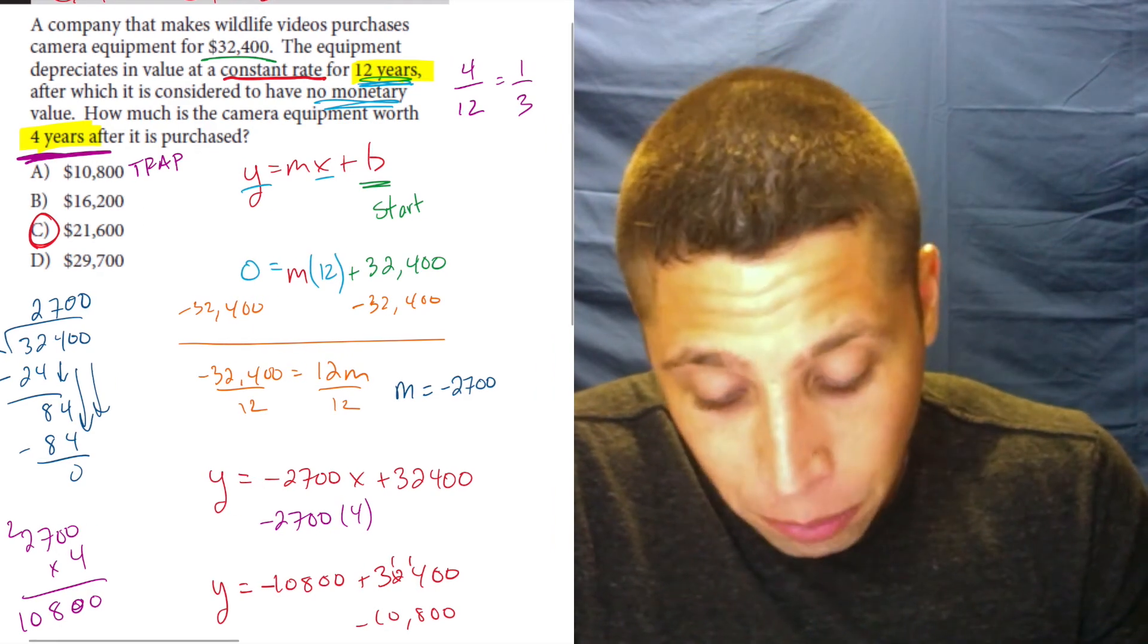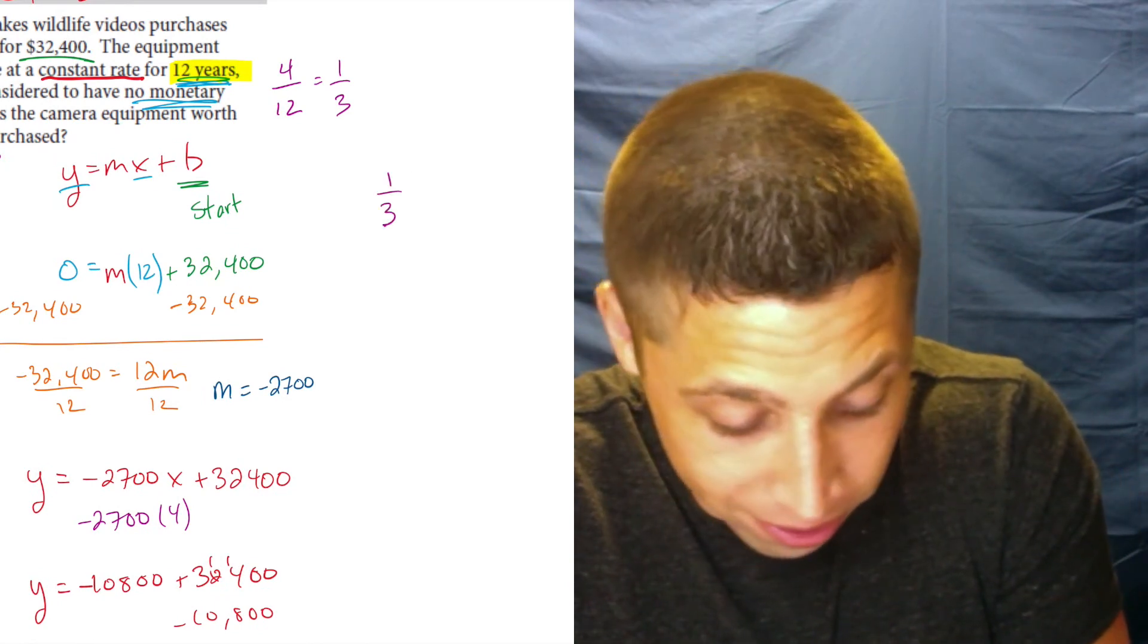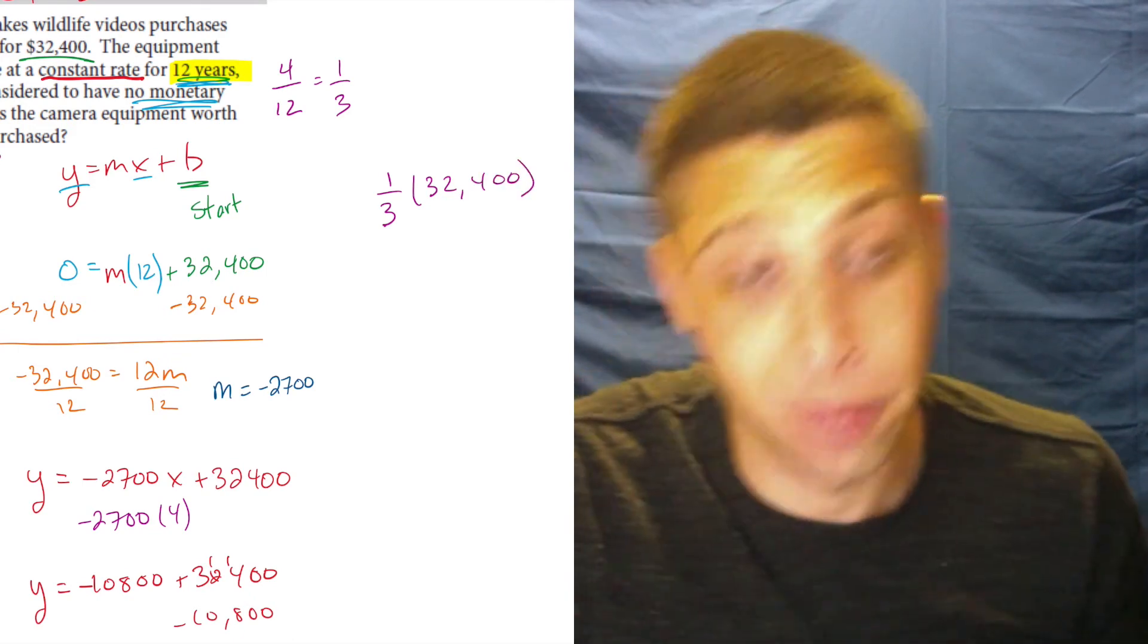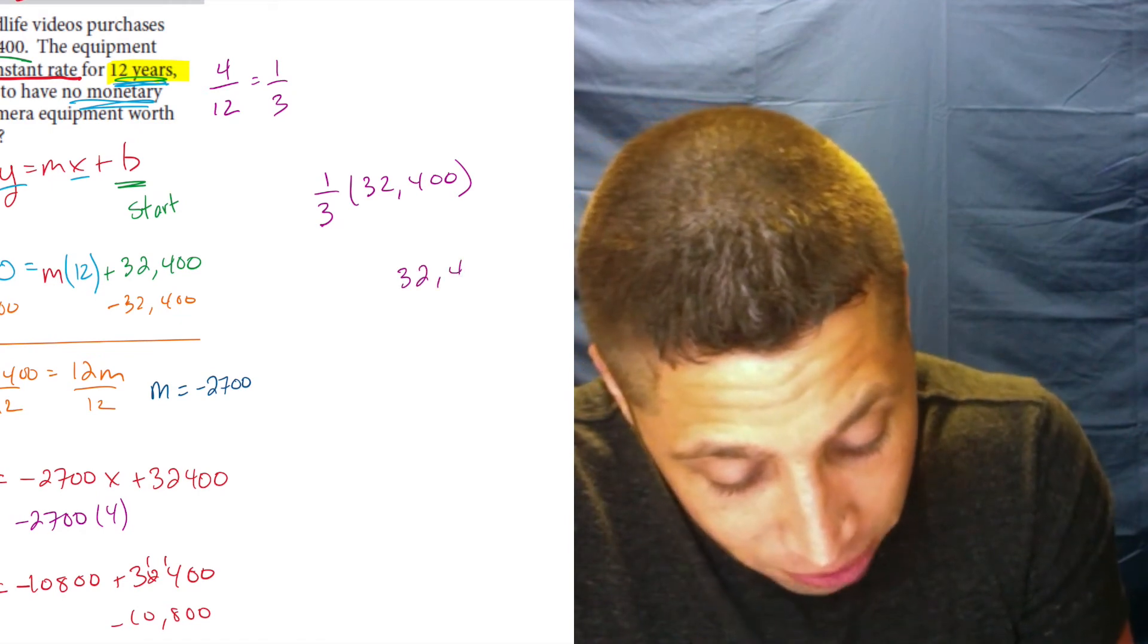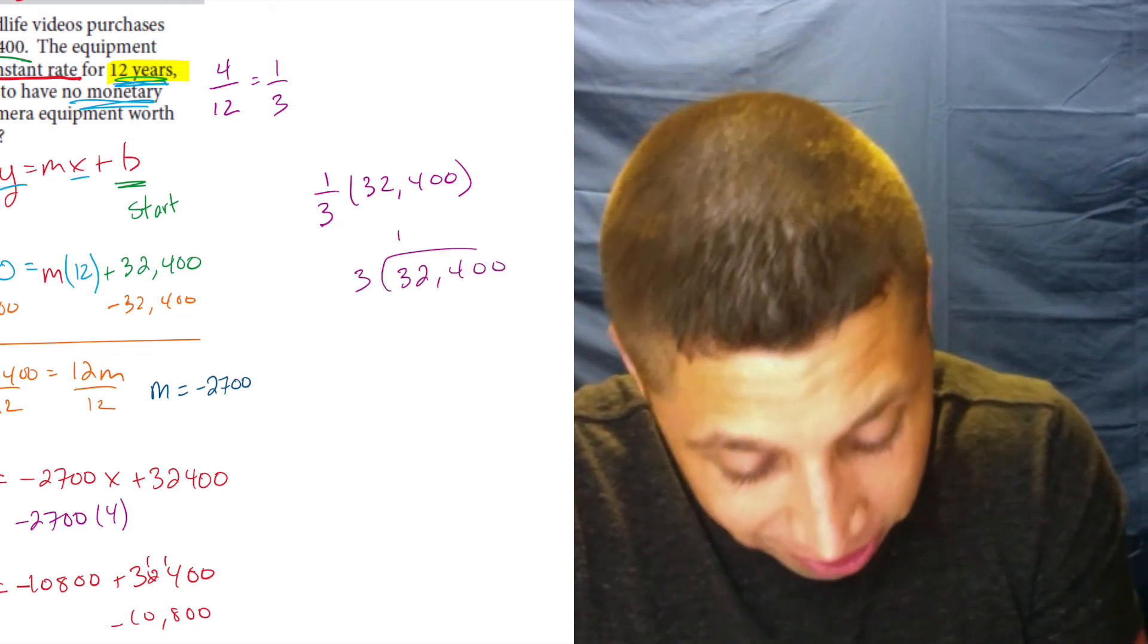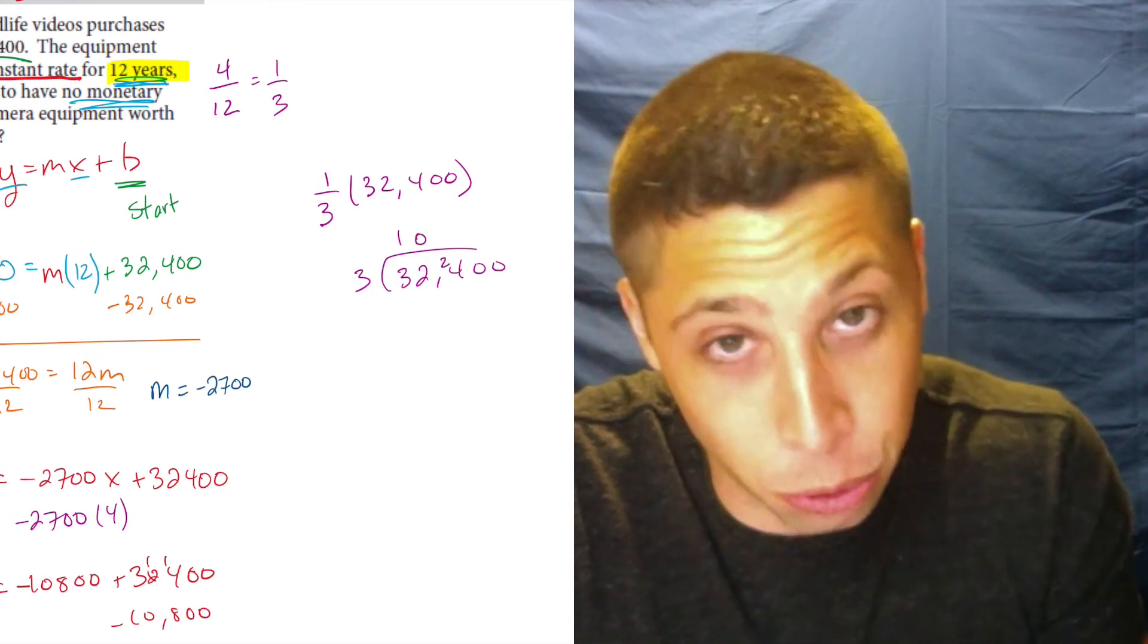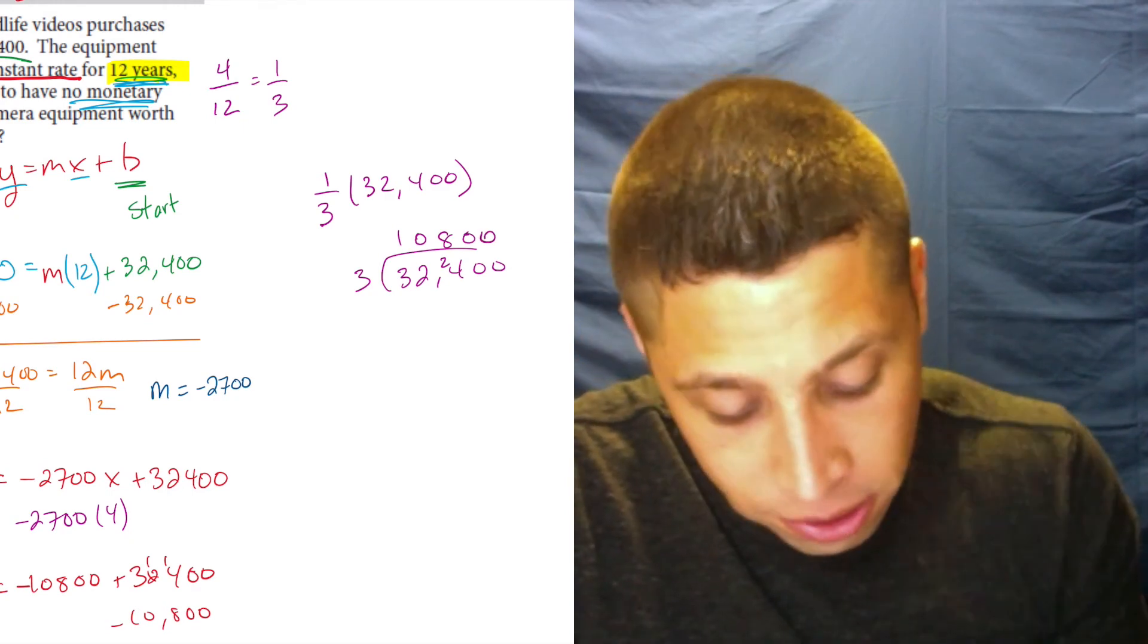So really what we want to do is take one-third of 32,400. And so again, we're kind of doing some division here. Three goes into—a little easier, though. Three goes into three once. Three goes into two zero times. So I'm going to do short division here. Three goes into twenty-four, eight, and zero, zero.